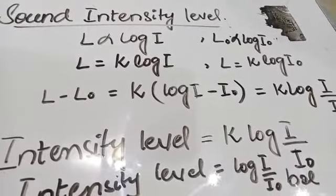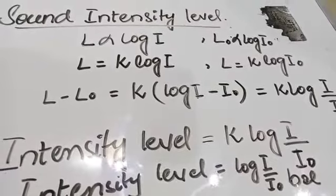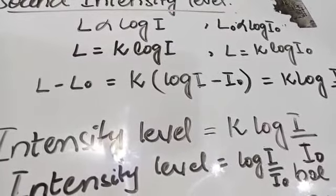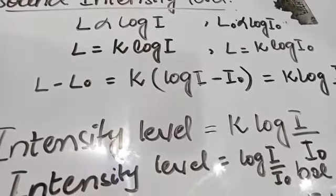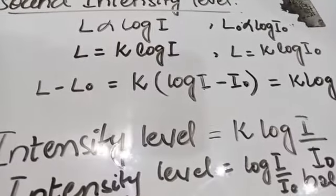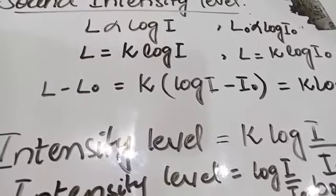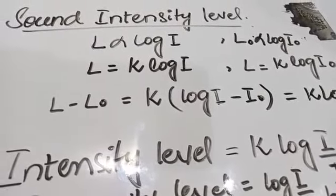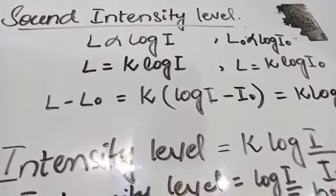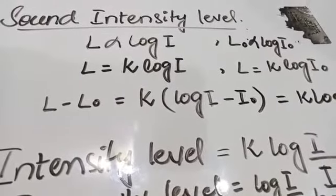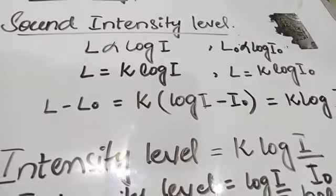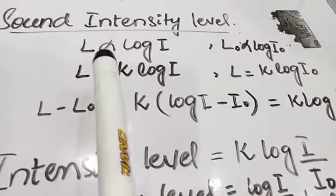The loudness of a sound depends not only on the intensity of sound but also on the physical condition of the listener. For young people the audible range is wide, but for aged people the range becomes less. The human ear is more sensitive to some frequencies than others. The frequency range for humans is 20 Hz to 20,000 Hz. The loudness of sound is directly proportional to the logarithm of intensity.